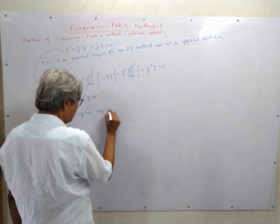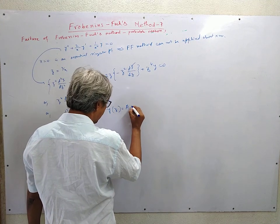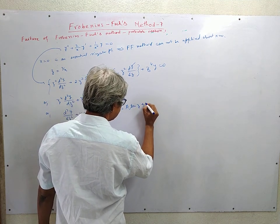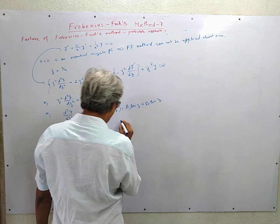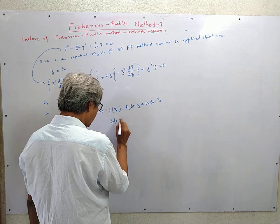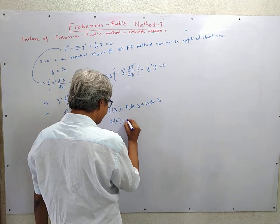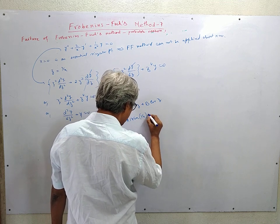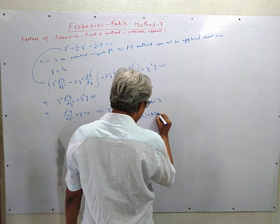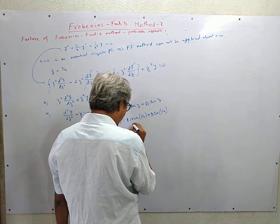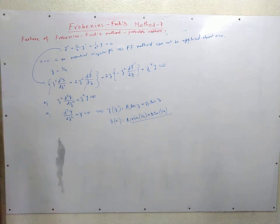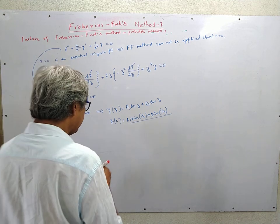Dividing through by z⁴, we obtain d²y/dz² + y = 0. Its solution is y(z) = A·sin(z) + B·cos(z), which when transformed back to x becomes y(x) = A·sin(1/x) + B·cos(1/x). Again, sin(1/x) or cos(1/x) cannot be expanded as a power series of x, which is why the method fails.